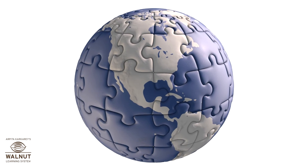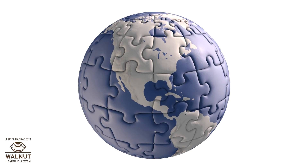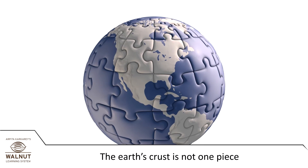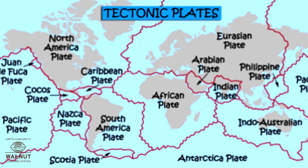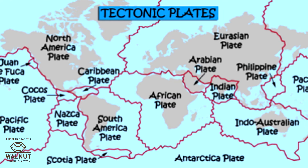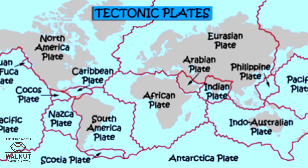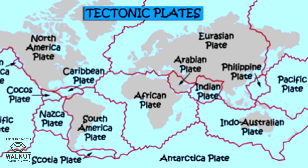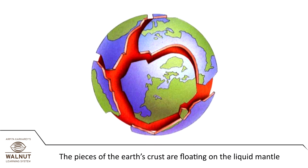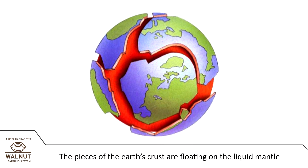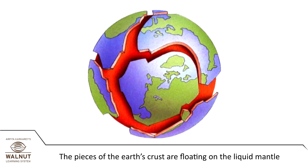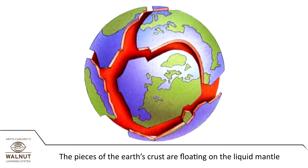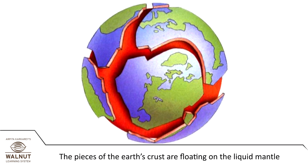One thing you should know about the crust is that it is not all just one piece. The Earth's crust is actually made up of many pieces that come together like a jigsaw puzzle — six big pieces, floating on the liquid mantle.